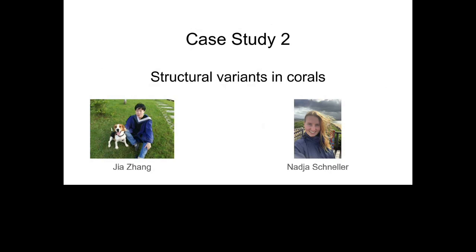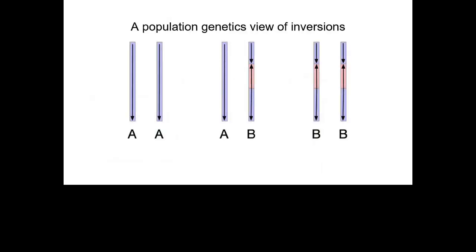The second study is newer work that Jia Zhang started and is now being done by Nadia Schnella as part of her MPhil. This would be probably one of the first studies on structural variants in corals — essentially uncharted territory. We're really interested in chromosomal inversions. There are three possible karyotypes of an inversion, and the reason this is interesting from a population genetics point of view is that recombination in both homokaryotypes is unaffected, but in the heterokaryotype there is actually blocked crossing-over in the inverted region.